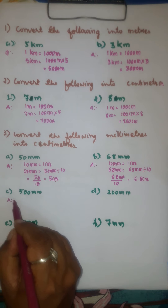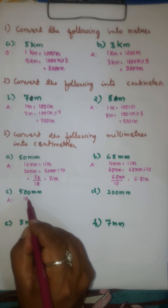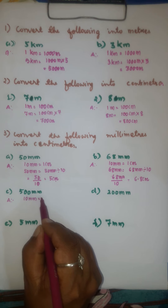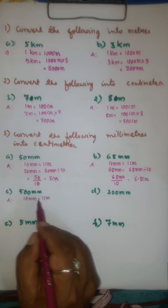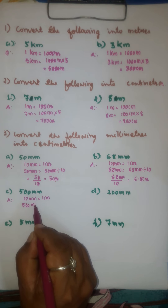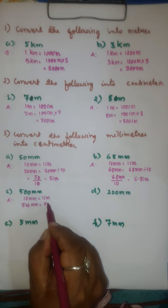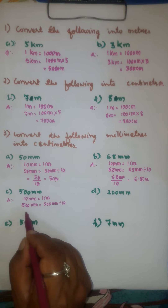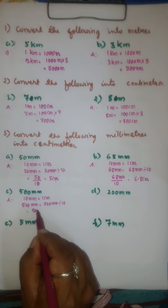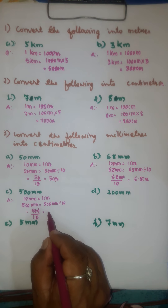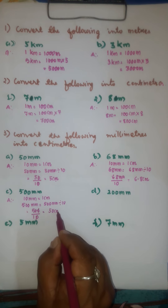In the third problem, 10 millimeters is equal to 1 centimeter. Therefore, 500 millimeters divided by 10 — the 10s get cancelled — gives 50 centimeters. And for 200 millimeters divided by 10, the zeros get cancelled and we have 20 centimeters as the answer.